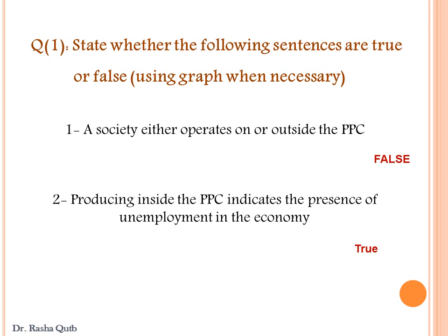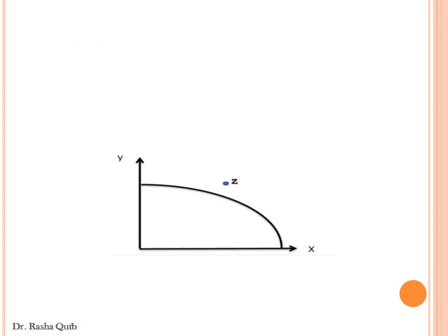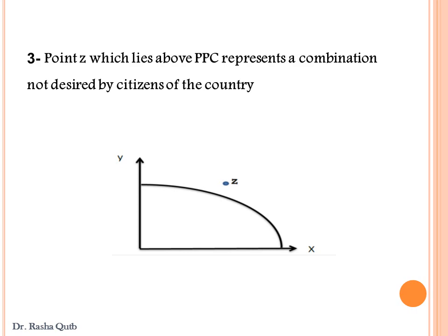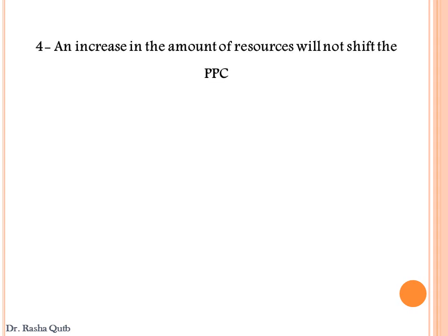Our resources are not fully employed — we have idle resources. Third: point Z, which lies above the production possibility curve, represents a combination that is not desired by the citizens of the economy. This sentence is false, because point Z is better than any other point on or inside the curve. But because of the scarcity of resources, the society cannot achieve such a point. Point Z is a desired but not attainable point. Fourth: an increase in the amount of resources will not shift the production possibility curve. This sentence is false, because any increase in resources causes an upward shift of the production possibility curve.